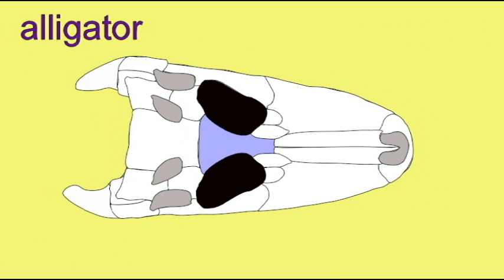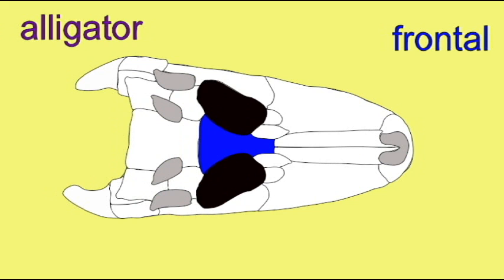In frogs, the frontal and parietal bones fuse to make a frontoparietal bone.